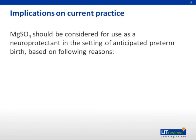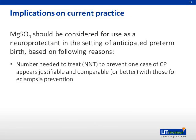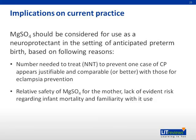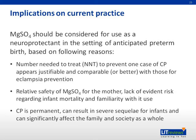Magnesium sulfate has been used extensively either as a tocolytic or for eclampsia prevention and treatment. Based on the available data from meta-analysis, 46 to 56 patients would need to be exposed to magnesium sulfate in utero before 30 or 32 weeks of gestation, respectively, to prevent one case of cerebral palsy. The number needed to treat appears justifiable and comparable or better with those for eclampsia prevention. The relative safety of magnesium sulfate for the mother, the lack of evidence of risk regarding infant mortality, and the familiarity of most obstetricians with its use support its consideration. Cerebral palsy is permanent, can result in severe sequelae for the infant, and can significantly affect the family and society as a whole.